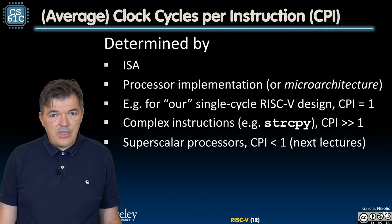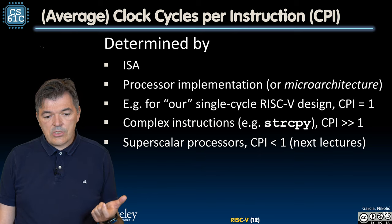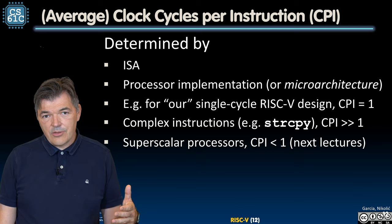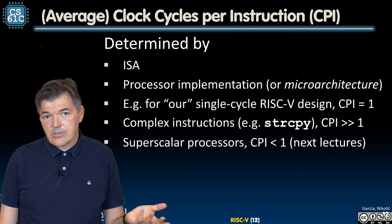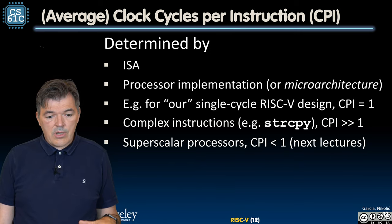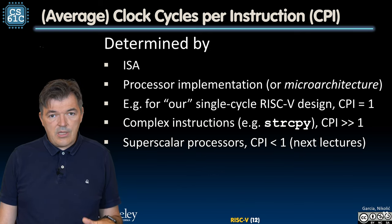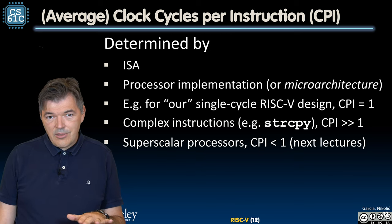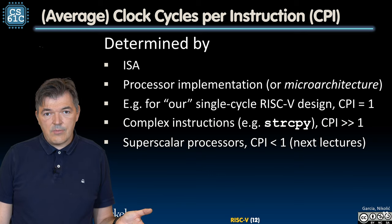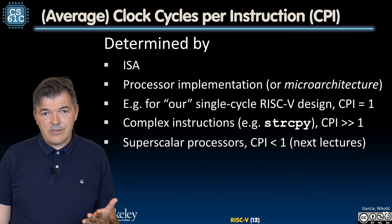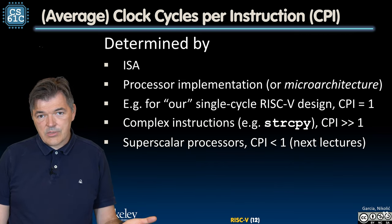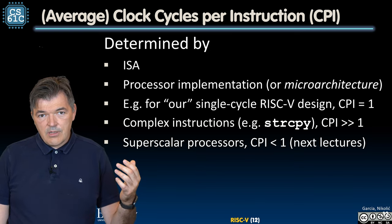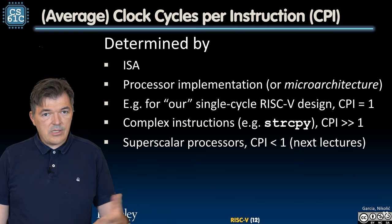This cannot be looked at in isolation. The next important metric is the second component of our Iron Law: the average number of clock cycles it takes to execute one instruction. In some architectures we always use one cycle per instruction, but in some architectures or implementations of the same ISA that number may vary. The number of clock cycles per instruction depends on the ISA, but within the ISA we can have different processor implementations with different average CPI numbers. For example, different Intel processors have different CPIs, and different implementations of x86 may differ in CPI between AMD and Intel.